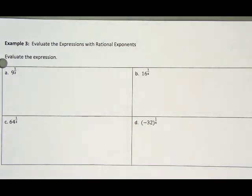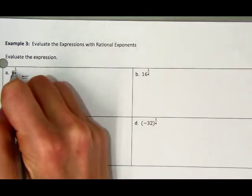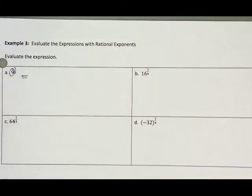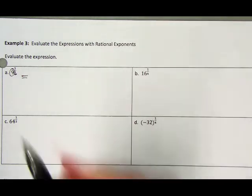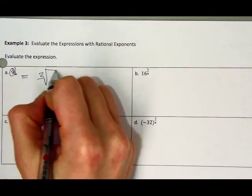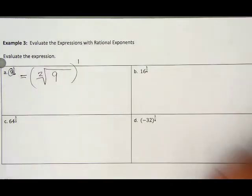So in example 3, we have 9 to the 1 half power. So as we just talked about, we can go one way, but we can also go backwards. So if we're given 9 to the 1 half power, this is the same thing as, remember your radicand or your inside value is the same thing as your base, and your denominator is the same thing as your index. So this is the same thing as your 2, so your square root of 9, all raised to the numerator, which is 1.